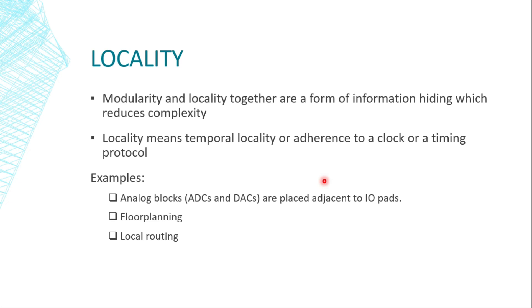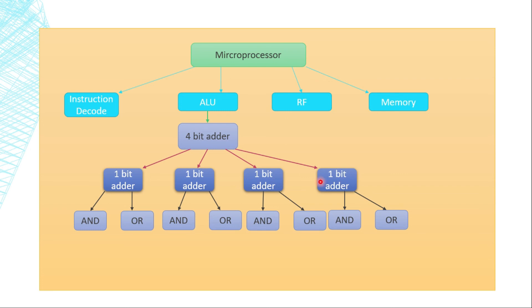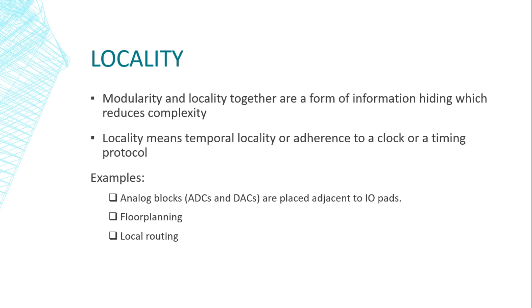The implementation examples of this locality are the physical examples. Analog blocks are placed adjacent to the IO pads, mostly. The reason is that the analog blocks, such as ADCs or DACs, draw a huge amount of DC current. If you want to reduce the total resistance, the metal length should be pretty small, for which we have to move these analog blocks adjacent to the IO pads. The floor planning strategy should be such that if two blocks are communicating, then these two should be placed adjacent to each other. The placement of the cells should be such that the routings, the length of the wires are reduced.